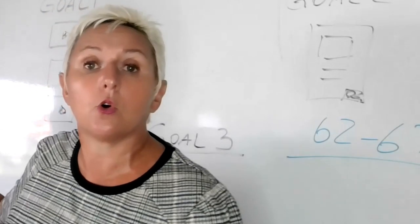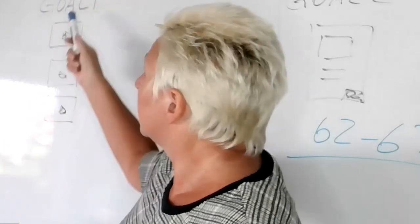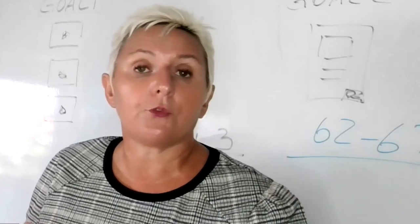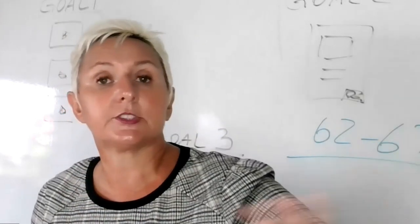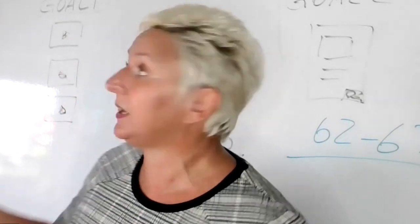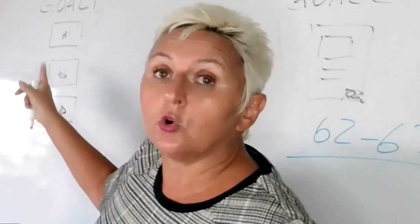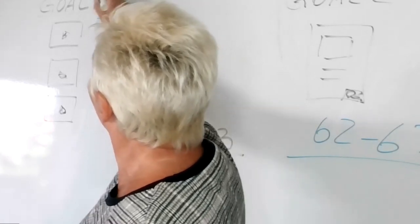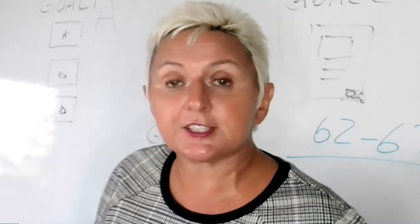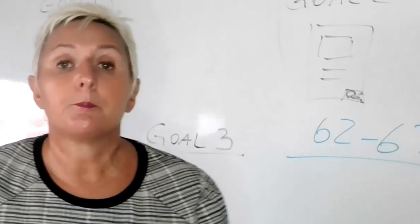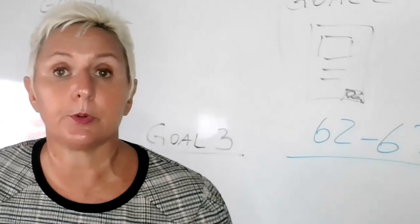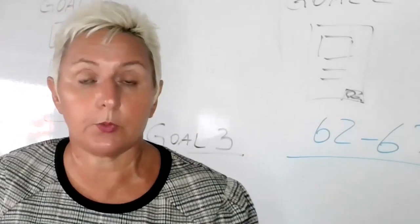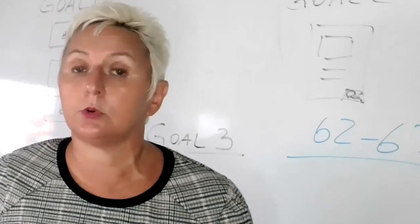That is where our goal number one comes in. You want to start to attract the people you want to work with and repel the ones you don't want to work with. That means you need to understand who you want to work with. So the A in our ABC strategy is audience building — attracting the people we want to work with and repelling the ones we don't.